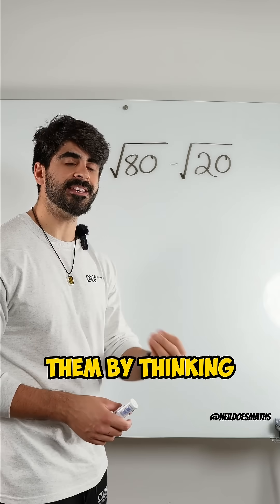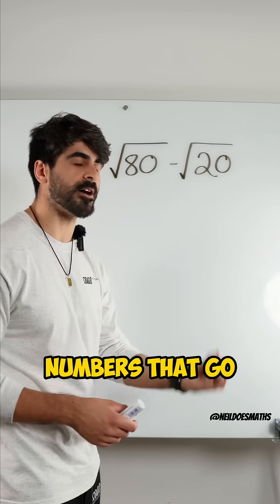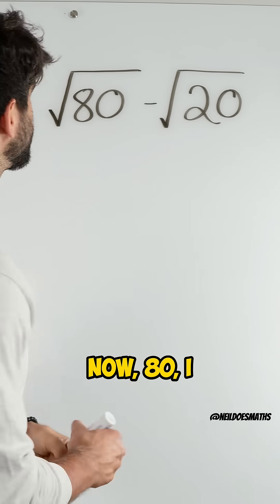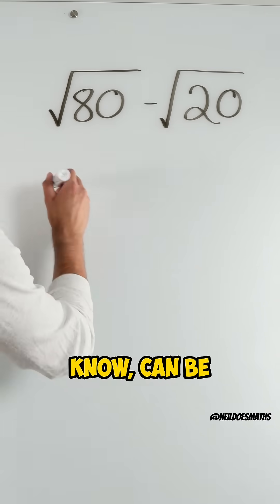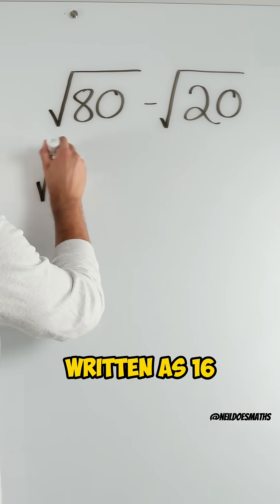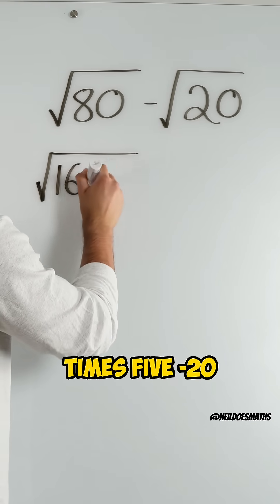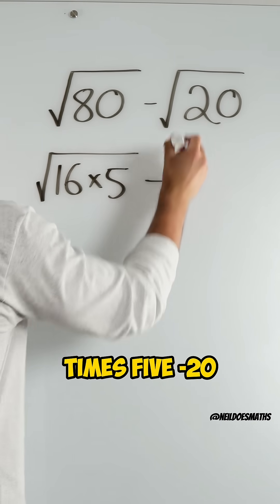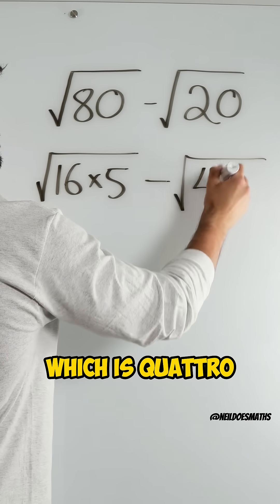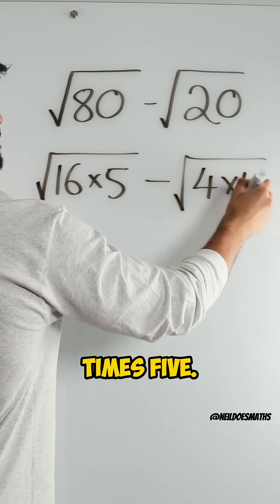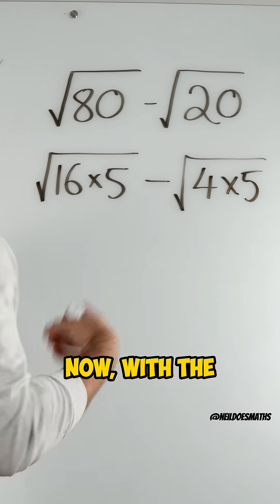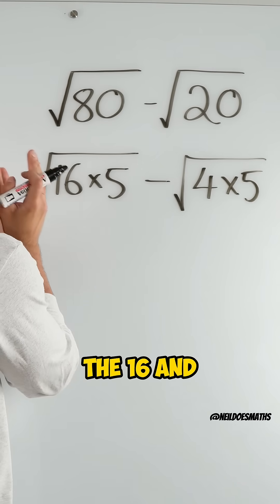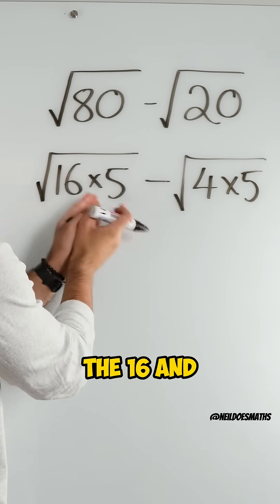We can simplify them by thinking about the square numbers that go into both of these numbers. 80 can be written as 16 times 5, minus 20, which is 4 times 5. Now, with the root, we can distribute that to the 16 and the 5.